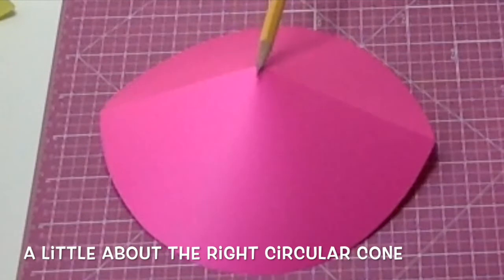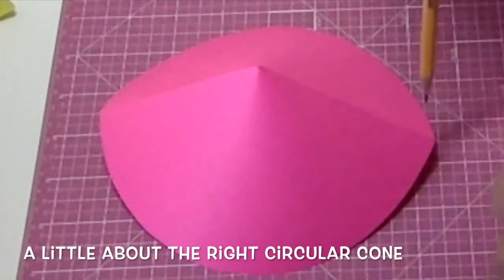The type of cone I'll be talking about is a right circular cone, which is if you flatten it out, the apex would land smack dab in the middle, on the center of the base.